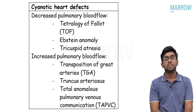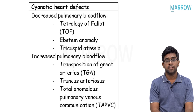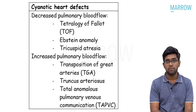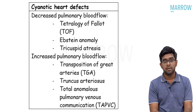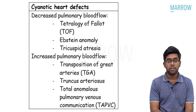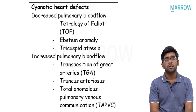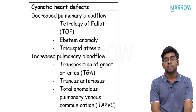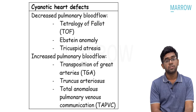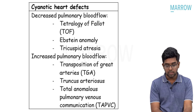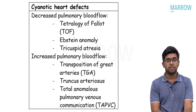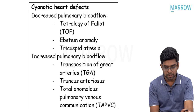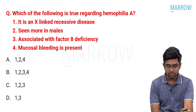Classification of cyanotic congenital heart defects: decreased pulmonary blood flow includes tetralogy of Fallot, Ebstein's anomaly, and tricuspid atresia. Increased pulmonary blood flow lesions include TGA (transposition of great arteries), TAPVC (anomaly of pulmonary veins), and truncus arteriosus. Three classical conditions under increased pulmonary blood flow.